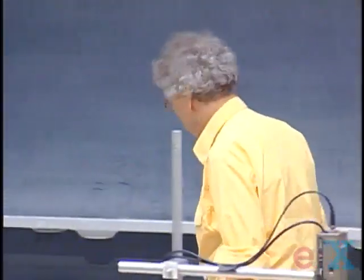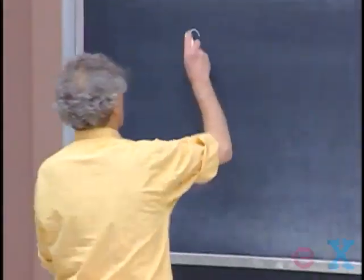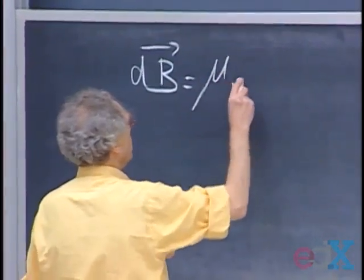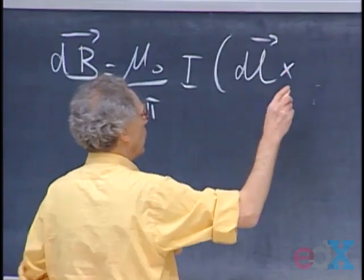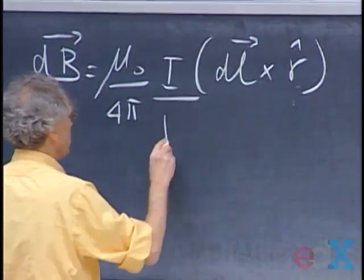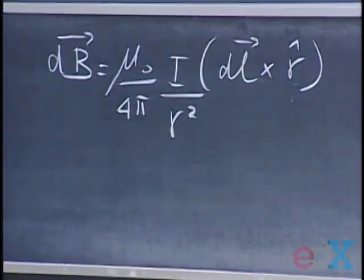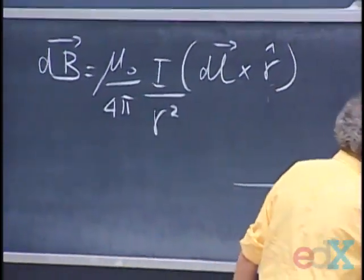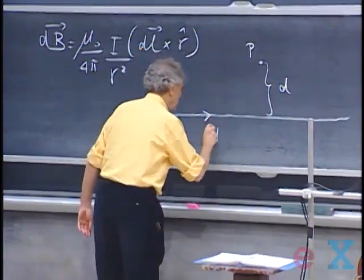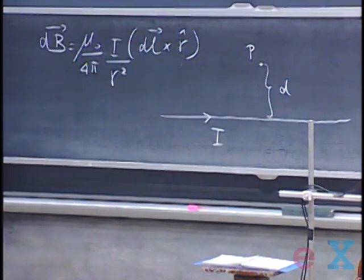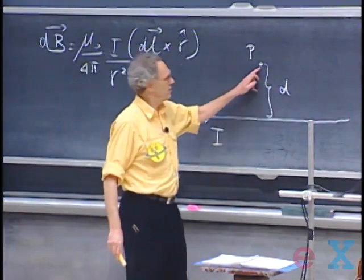Let's first start with Biot-Savart law. There are not too many problems that one can do with Biot-Savart. dB equals μ₀ divided by 4π times the current dL cross R̂ divided by R². That's the formalism — a classic problem that you probably have done. We have point P at a distance D from a wire and the current through the wire is I. If you want to know what the magnetic field at P is, you can use Biot-Savart.